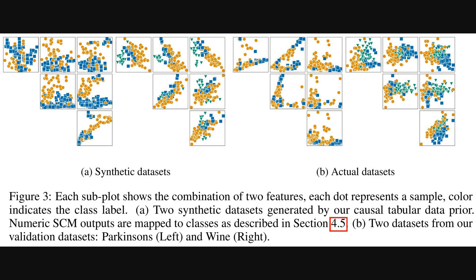So we just saw those smooth decision boundaries in figure four, which Tab PFN learns from all that synthetic data. Figure three actually visualizes what some of that synthetic data looks like. You can see scatter plots on the left, showing different patterns where each dot is a sample and the color shows its class. Next to it they show similar plots for a couple of real datasets they used for validation — Parkinson's and wine — just to give a comparison. It really highlights the kind of diverse structures the model trains on.